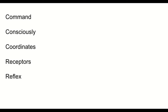Next, we have receptors. Receptors are organs or nerve endings that receive information from inside and outside of the body and send that information to the brain. And then finally, we have reflex. Reflex is an action that happens almost instantly, often without the brain sending a message to perform the action.